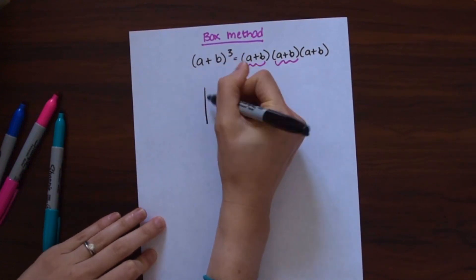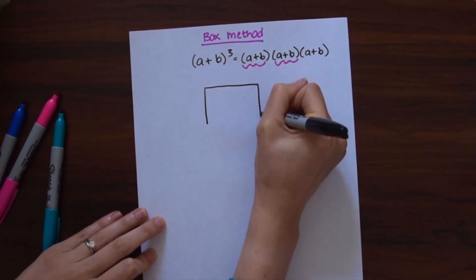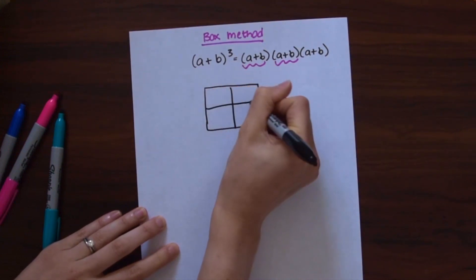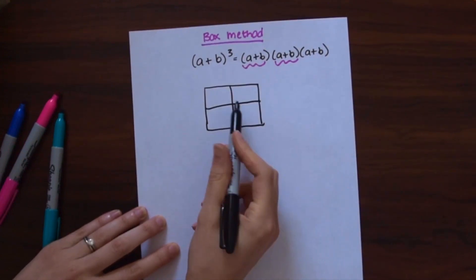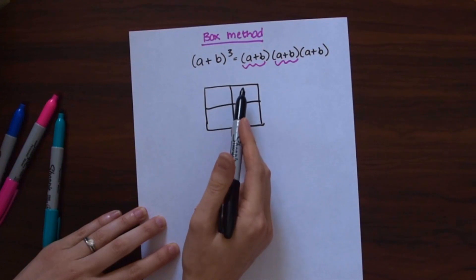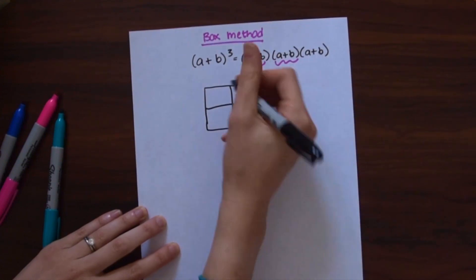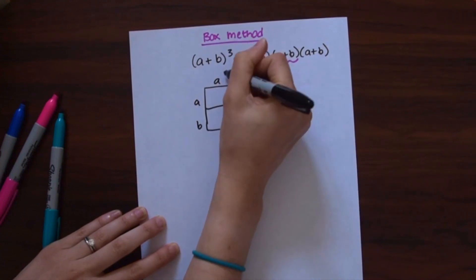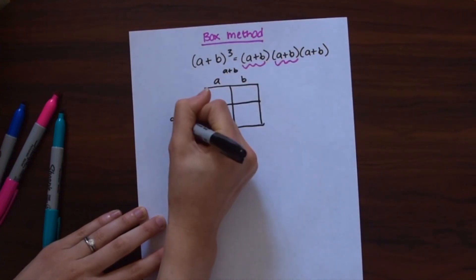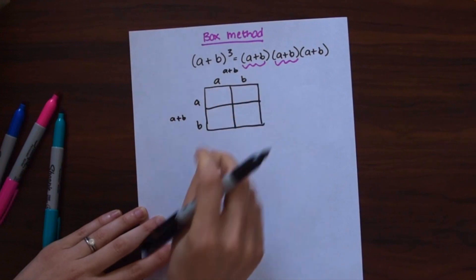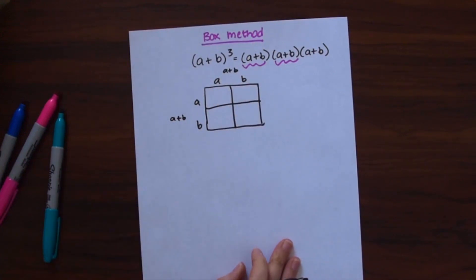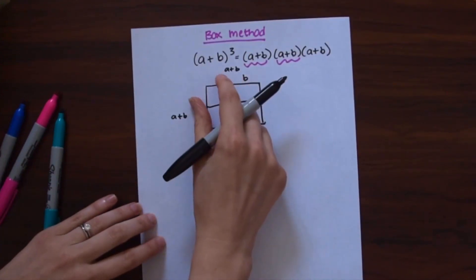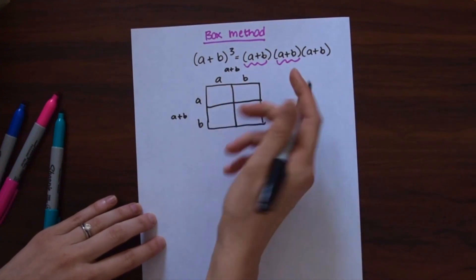So we're going to make our first box, which is going to be two by two — two columns, two rows. And now we're just going to put each term of (a+b) on either side of the box: a, b across the top and a, b down the side. This part represents (a+b) and this part represents (a+b) and we're just multiplying them together. To multiply them we take each term and where they line up we multiply them.